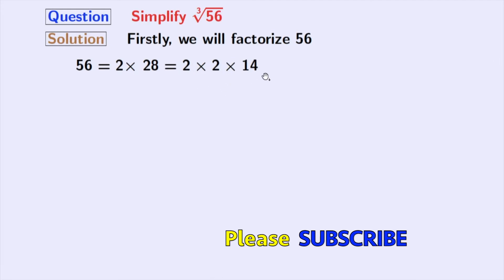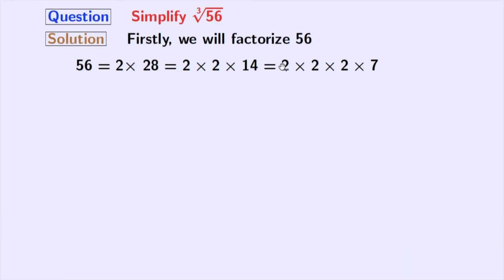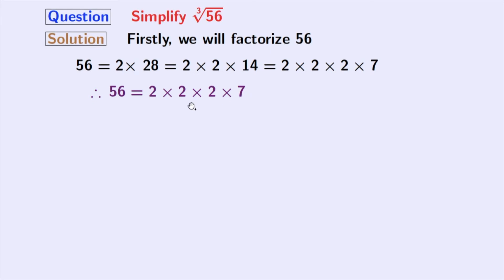Now, 14 is also an even number and 14 is divisible by 2. So we have 14 equal to 2 times 7. Now, look that all these numbers here are prime numbers, so we will not factorize further. Finally, we have 56 equal to 2 times 2 times 2 times 7, and this is the prime factorization of 56.